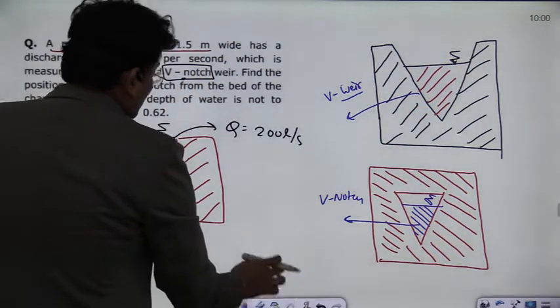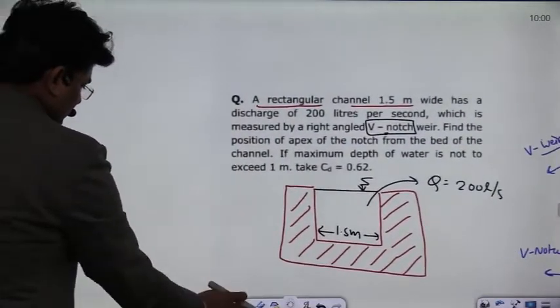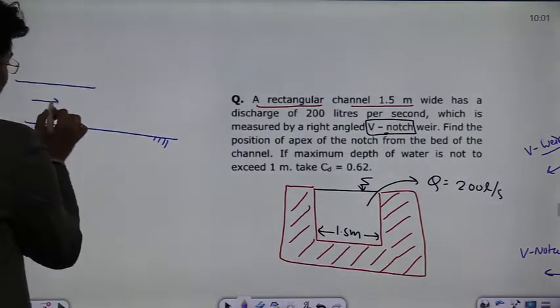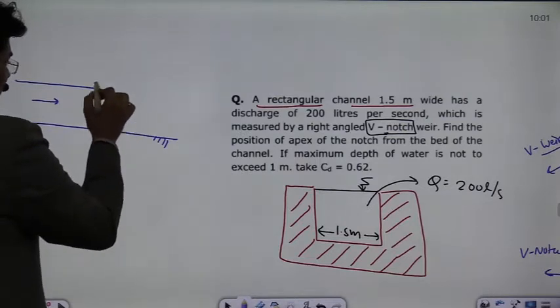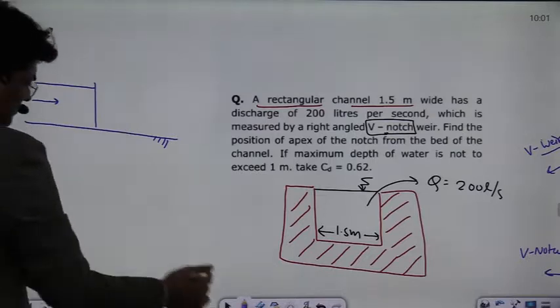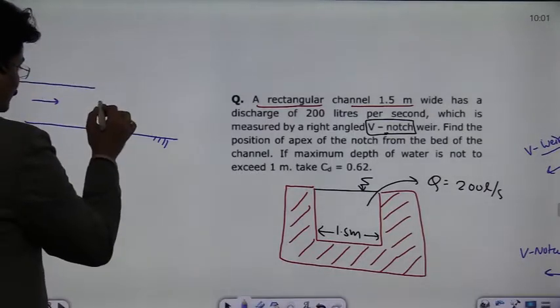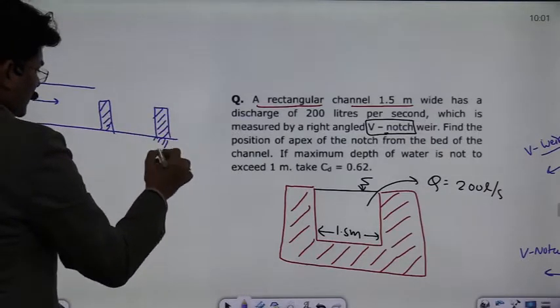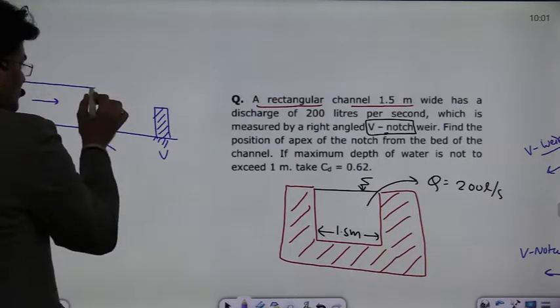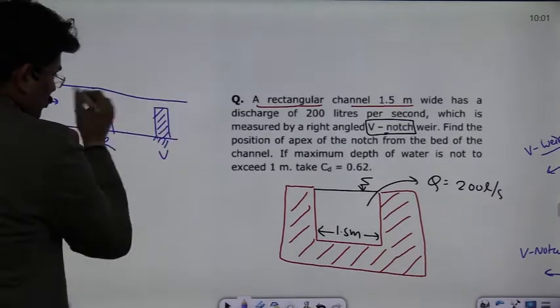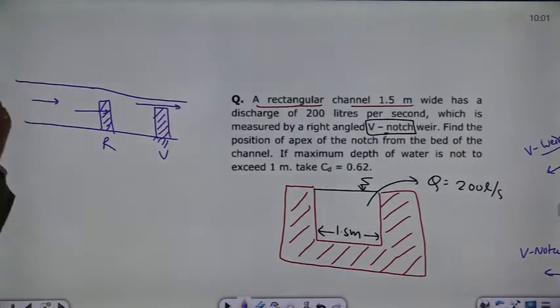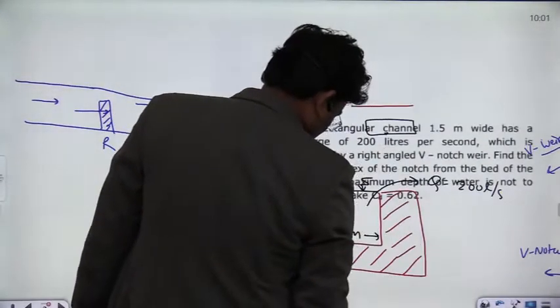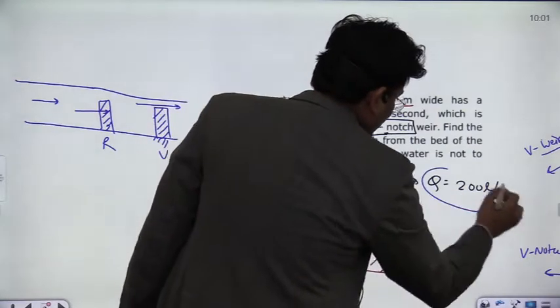Understand the question carefully, what is said in the question: v-notch weir. Understand carefully, suppose this is the wall of the channel, flow was happening in this direction. So first you placed a rectangular weir here. Let's take this, the rectangular weir here, something like this, and this is the rectangular weir. If you come here and place a notch or weir, this is rectangular weir. You have v-notch here. So the flow that happens here will be through this. Whatever flow happens above this will also be through its flow, because there is no other path. So discharge will be the same, and discharge is given in the question, that is 200 liter per second, okay.